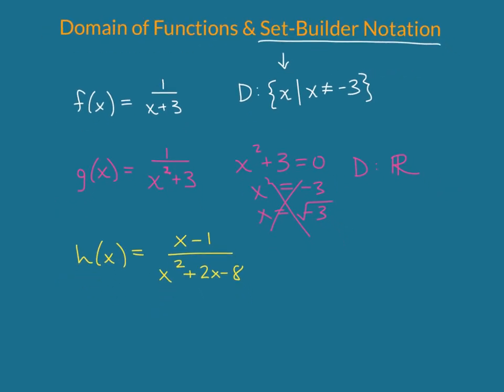The denominator will factor into x plus 4 and x minus 2. What values of x make that 0? Well the value of x that makes this 0 is negative 4 and the value of x that makes this one 0 is 2.